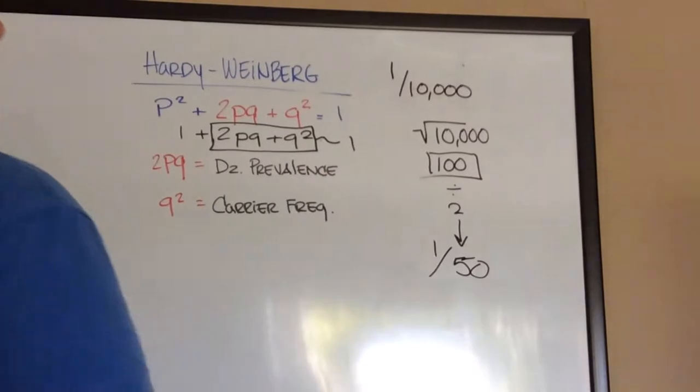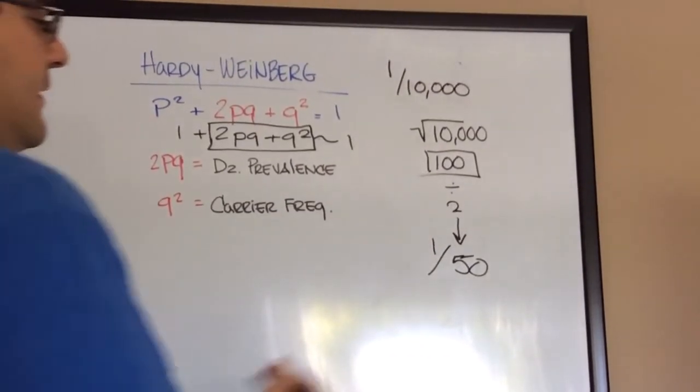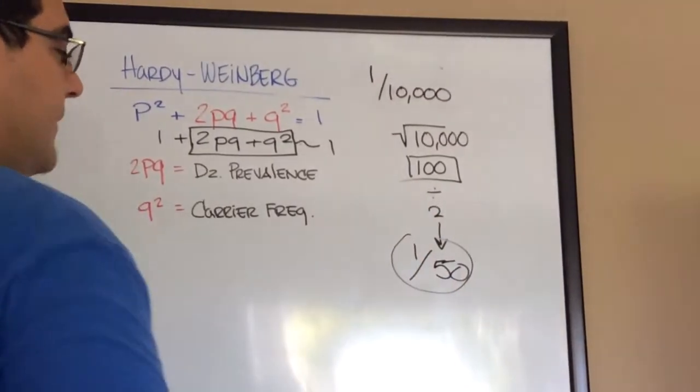Your carrier frequency for a disease prevalence of 1 in 10,000 is 1 in 50. That's it. It was that simple.